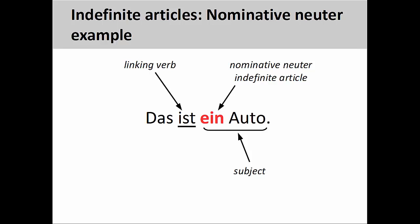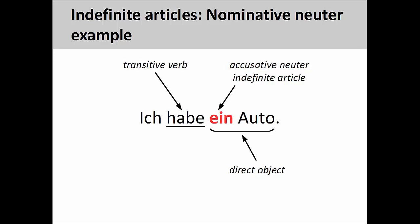By looking at the verb, however, you can determine whether the neuter indefinite article is nominative or accusative. A linking verb indicates that 'Auto' is a predicate noun and 'ein' must be in the nominative case, while a transitive verb indicates that 'Auto' is a direct object and 'ein' must be in the accusative case.